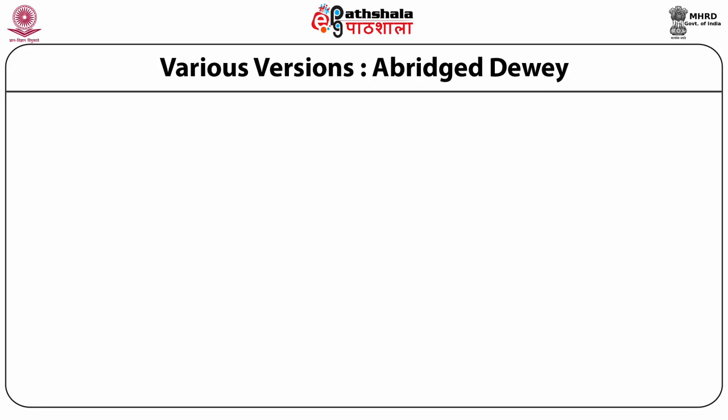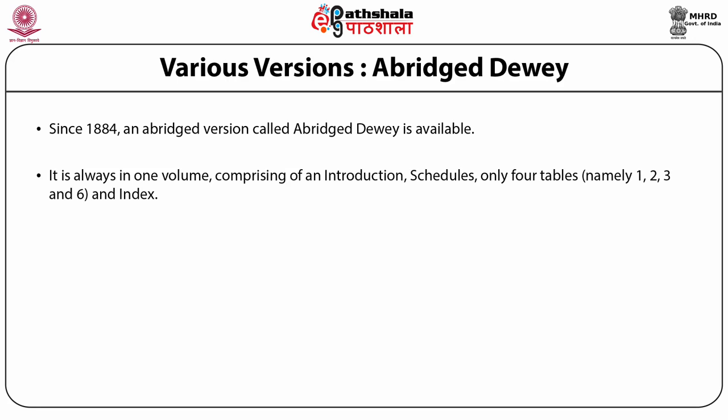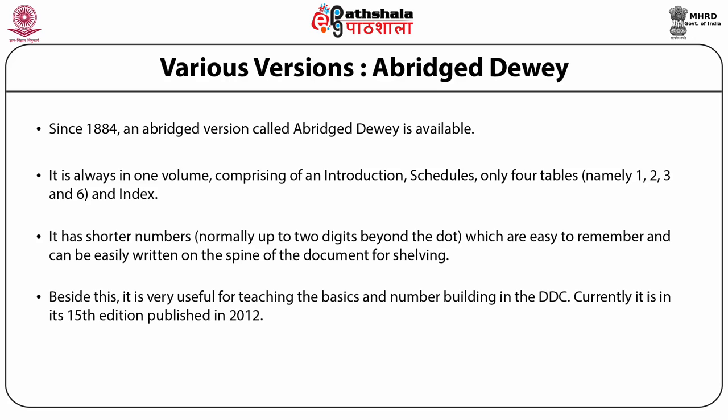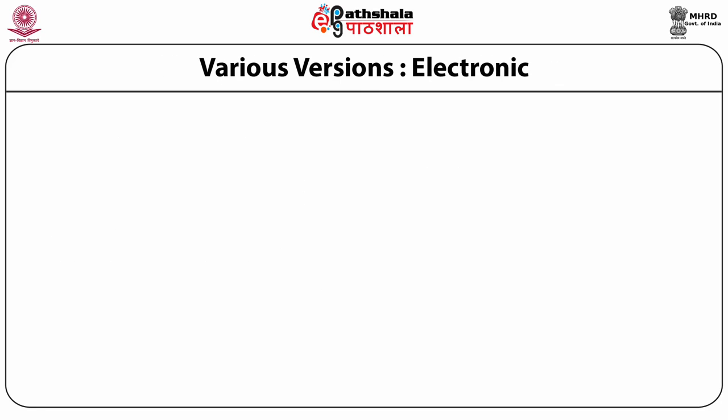The DDC is available in various versions. An abridged version has been available since 1884. It is always in one volume, comprising an introduction, schedules, only four tables — namely 1, 2, 3 and 6 — and an index. It has shorter numbers, normally up to two digits beyond the dot, meaning a maximum of five digits, which are easy to remember and write on the spine of documents. It is very useful for teaching the basics and number building in the DDC. Currently it is in its 15th edition, published in 2012, and is very useful for classifying books in a small library having up to 20,000 titles.